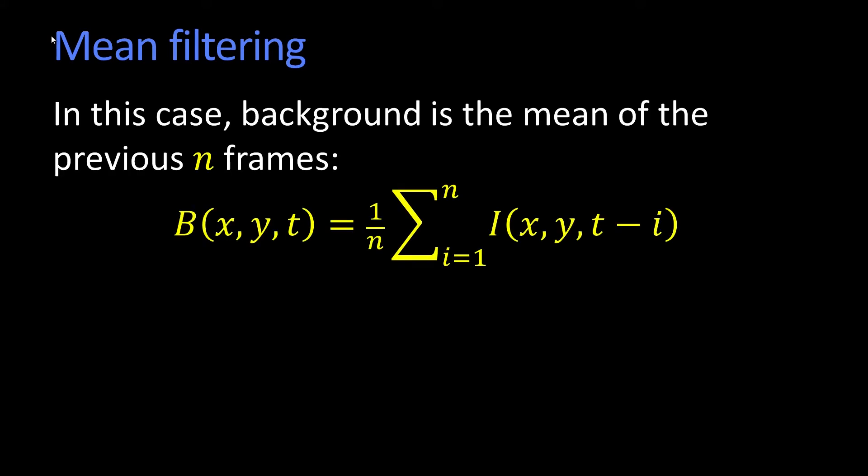An obvious better idea is what's referred to as mean filtering. My background, instead of just being the last frame, which seems really silly, is now the average of the last n frames. My background at time t is just the average of the sum of n frames in the past.